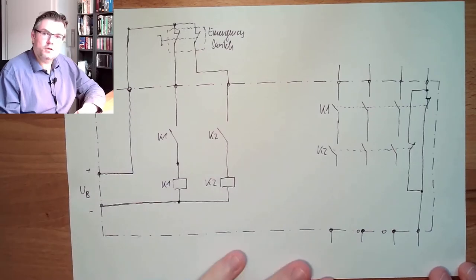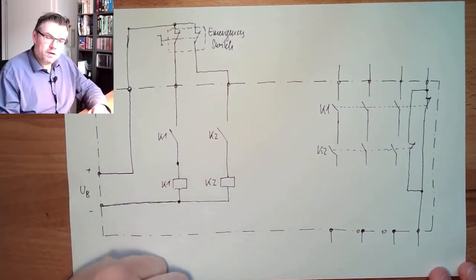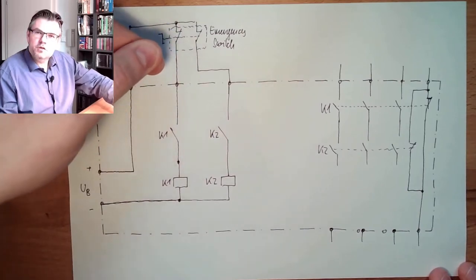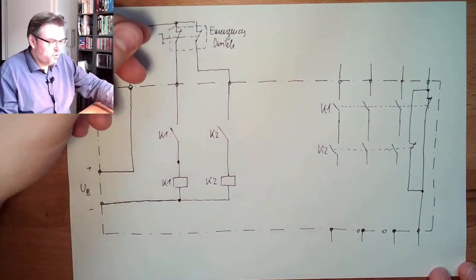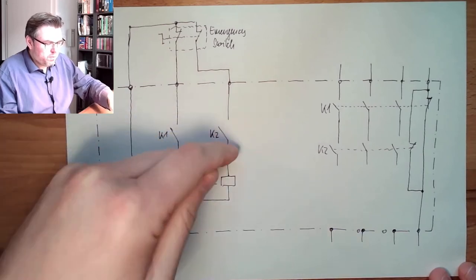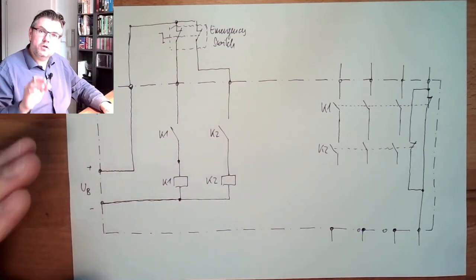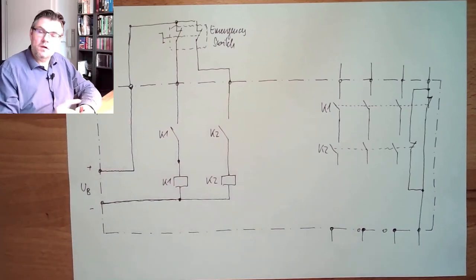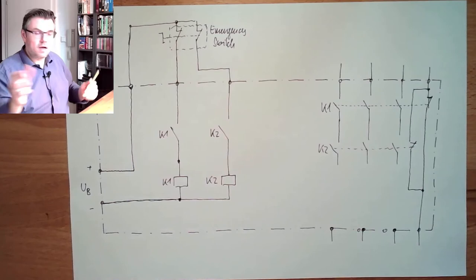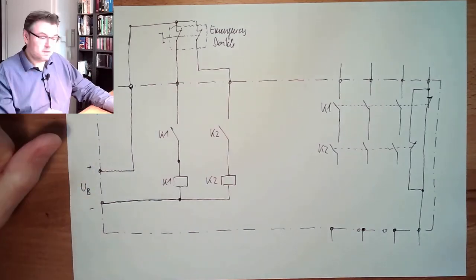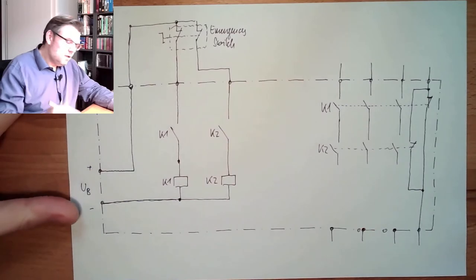Now I have an issue. How do we close them again? Just returning the emergency switch to its original position is not working, because these are open. This will not turn on. This would be stupid. I push emergency stop, then I release emergency stop, it's already starting? No, this should not be. We talked about this. We need a reset button.